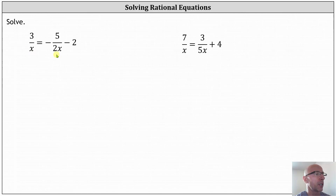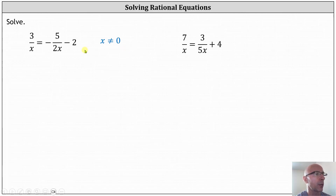Look at the first equation. Notice when x equals zero, we have two fractions with a denominator of zero, and therefore we must exclude zero as a possible solution. This is called an excluded value. And now we solve the equation. For the next step, we'll multiply both sides of the equation by the least common denominator.